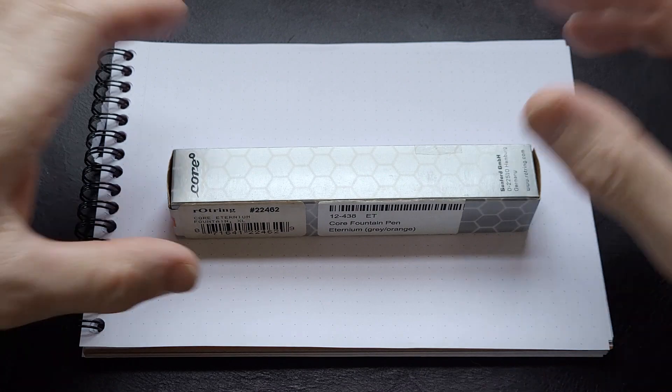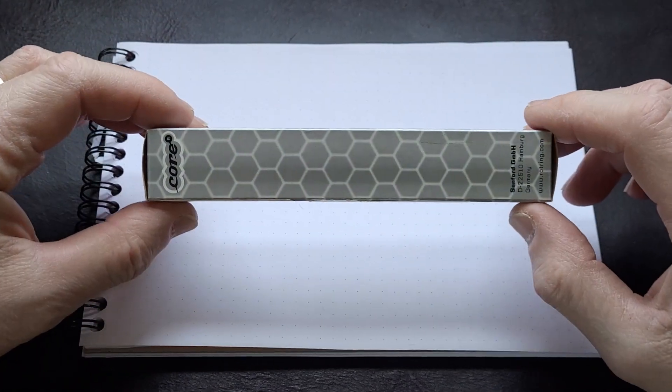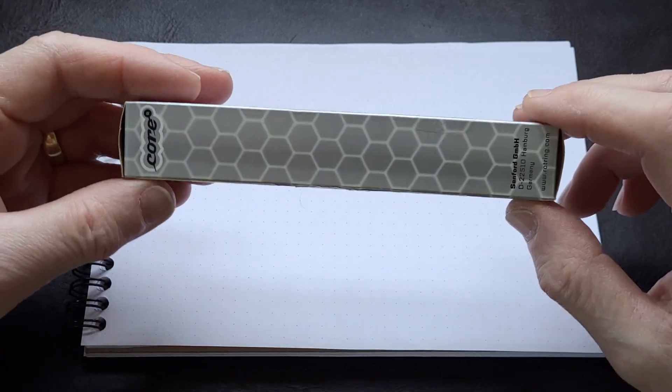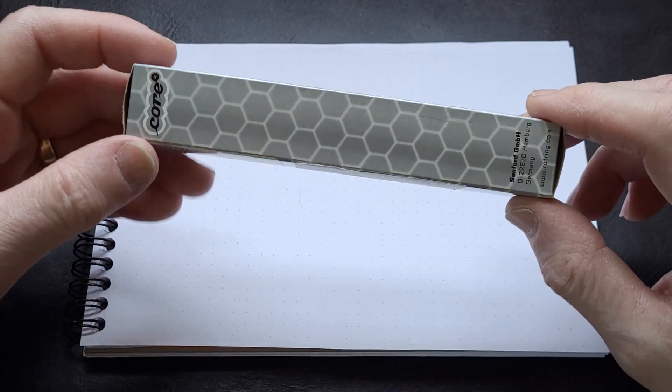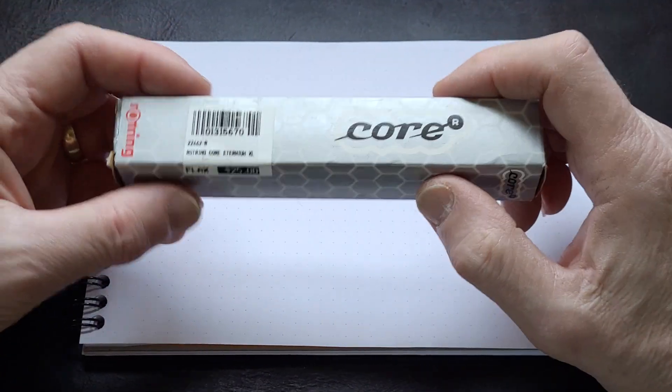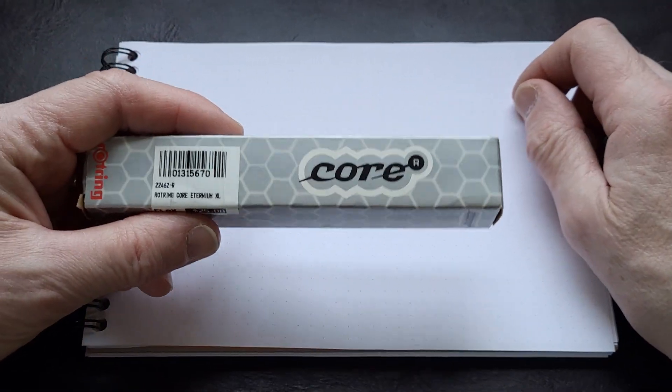Anyway, it comes in a box. Believe it or not, it's not a tube of toothpaste in this box. It's a fountain pen, and it's called Core. I did a video the other day with a friend of mine, Peter Roccavina, and he showed me his top five pens, and this is one of his top five pens.